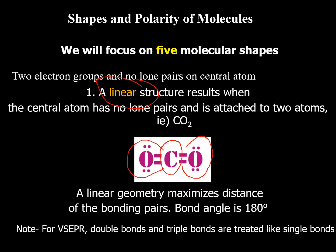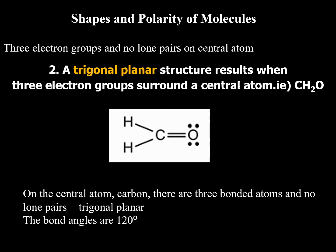Linear has a bond angle of 180 degrees. The second shape is trigonal planar. Using CH2O as an example: focusing on the central carbon, there are three groups attached and zero lone pairs on the central atom. Three groups plus no lone pairs equals trigonal planar, with bond angles of 120 degrees. Without the correct Lewis structure, we would not determine the correct shape.